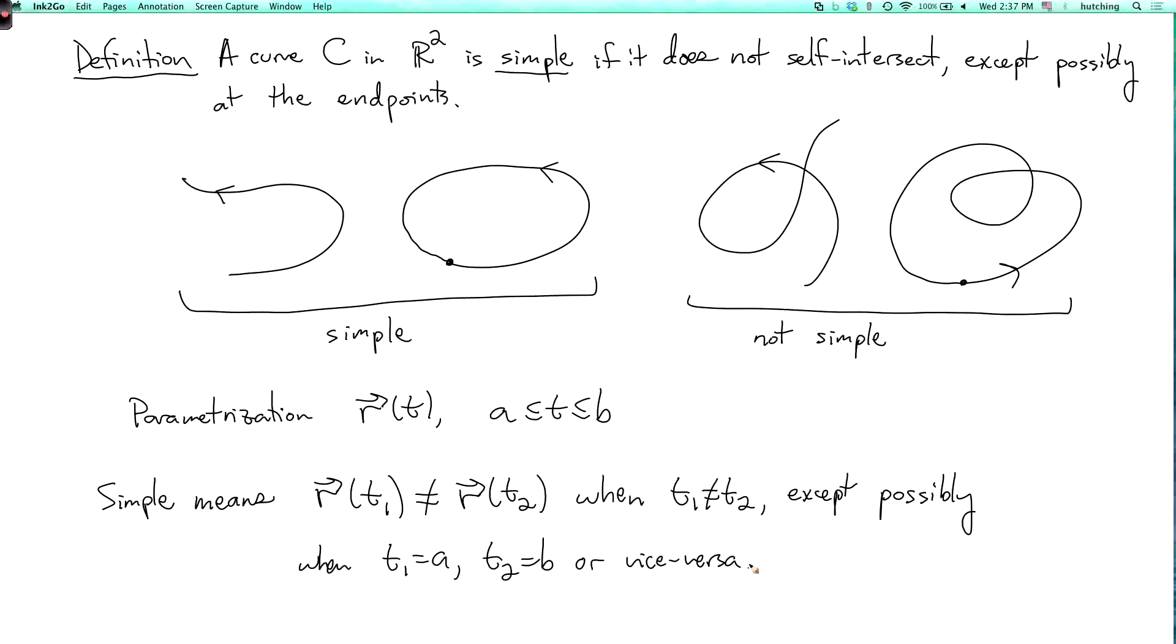In particular, a simple closed curve is one that is both simple and closed. So this one here is simple and closed. This one here is closed, but it's not simple.